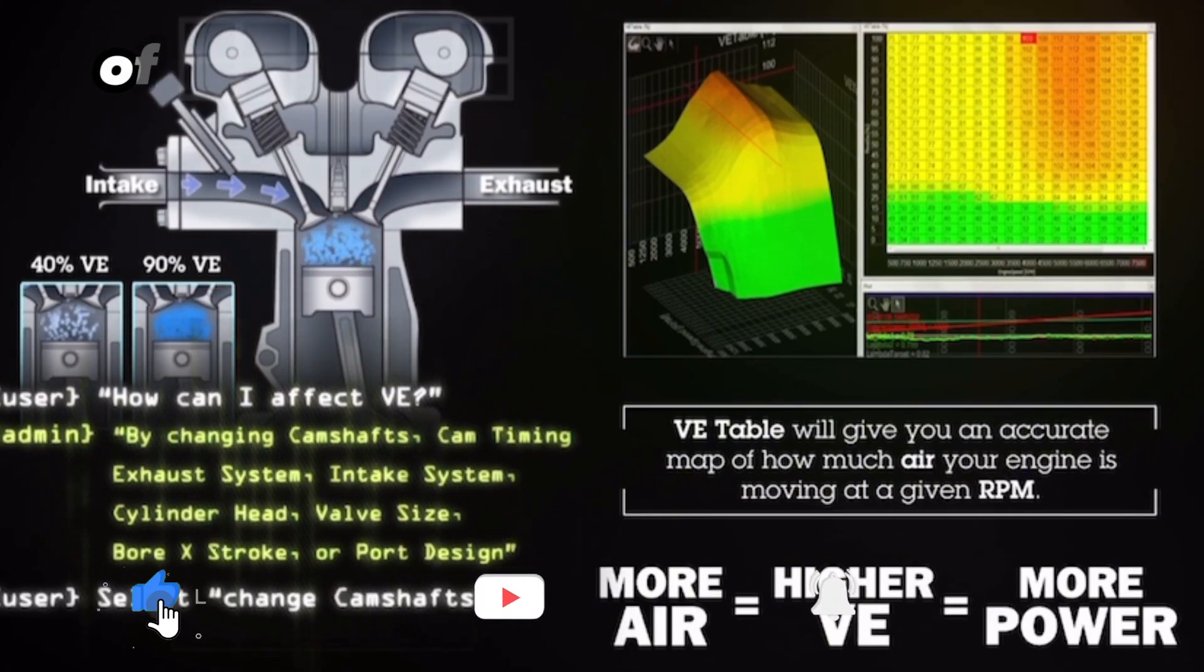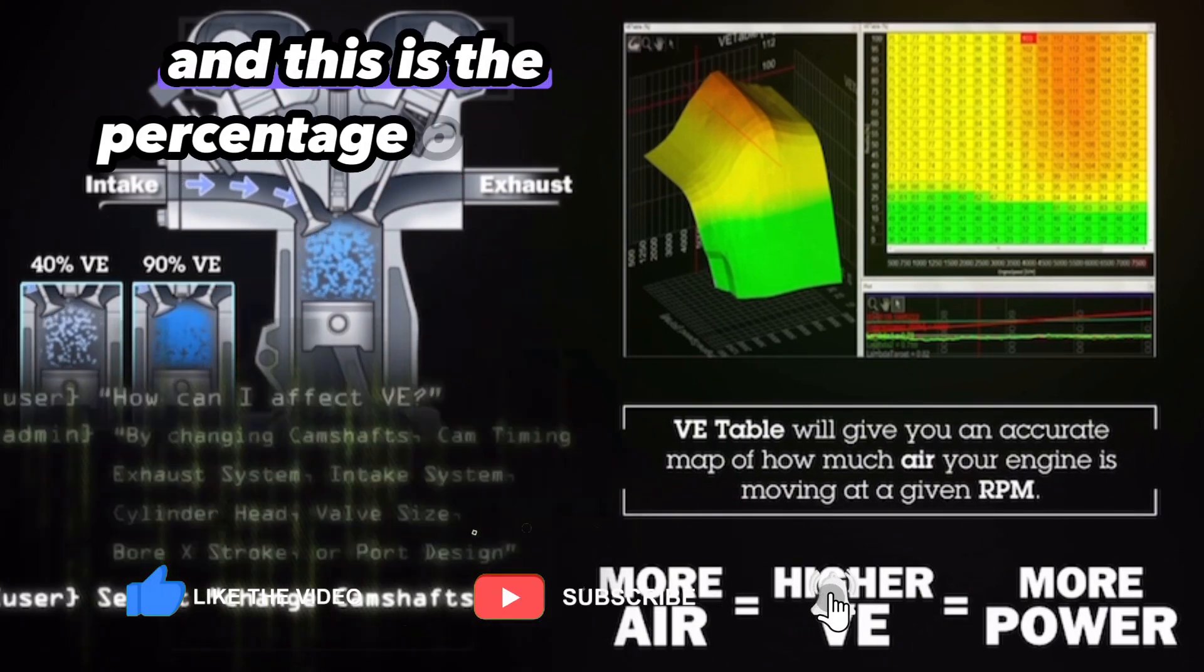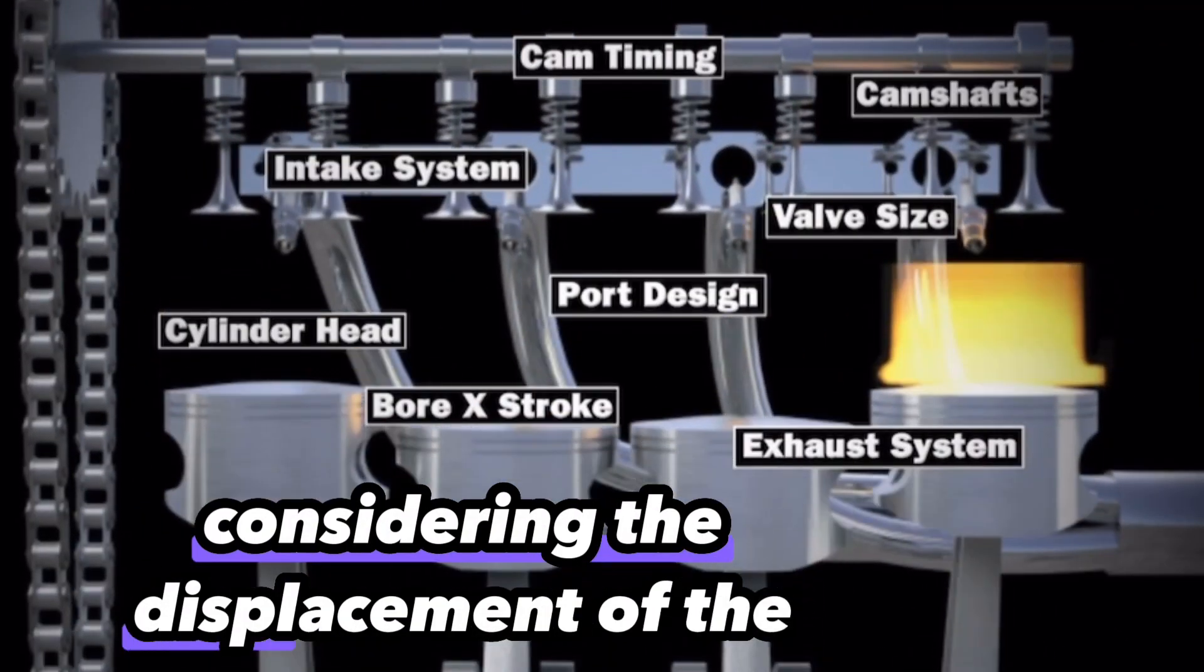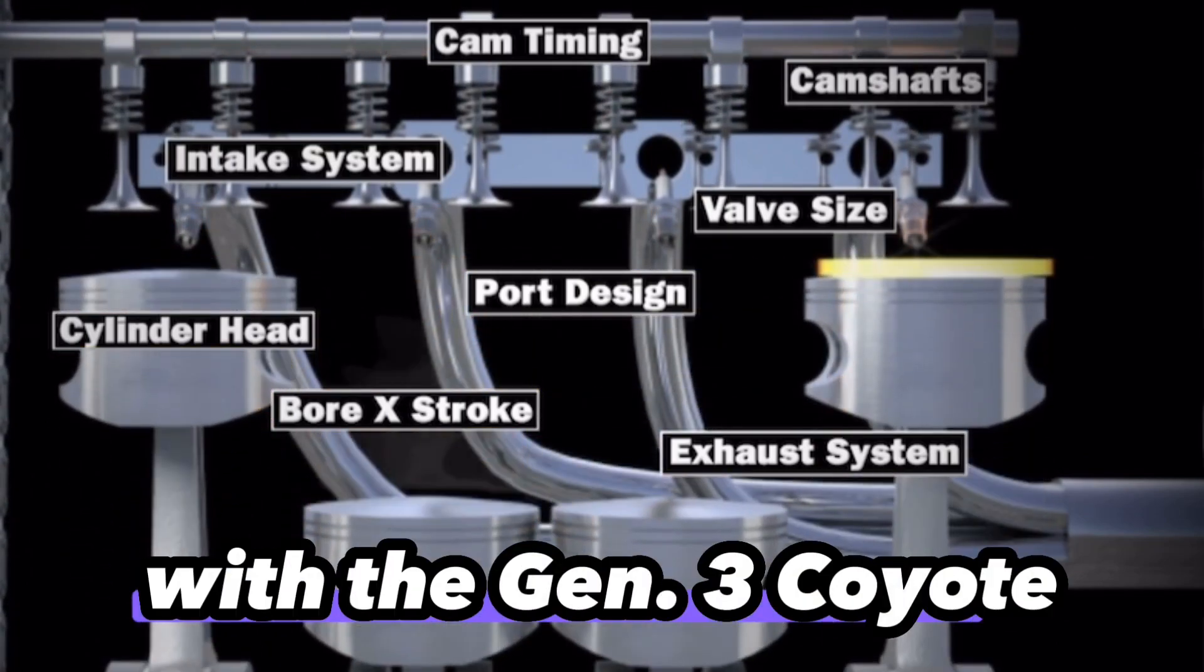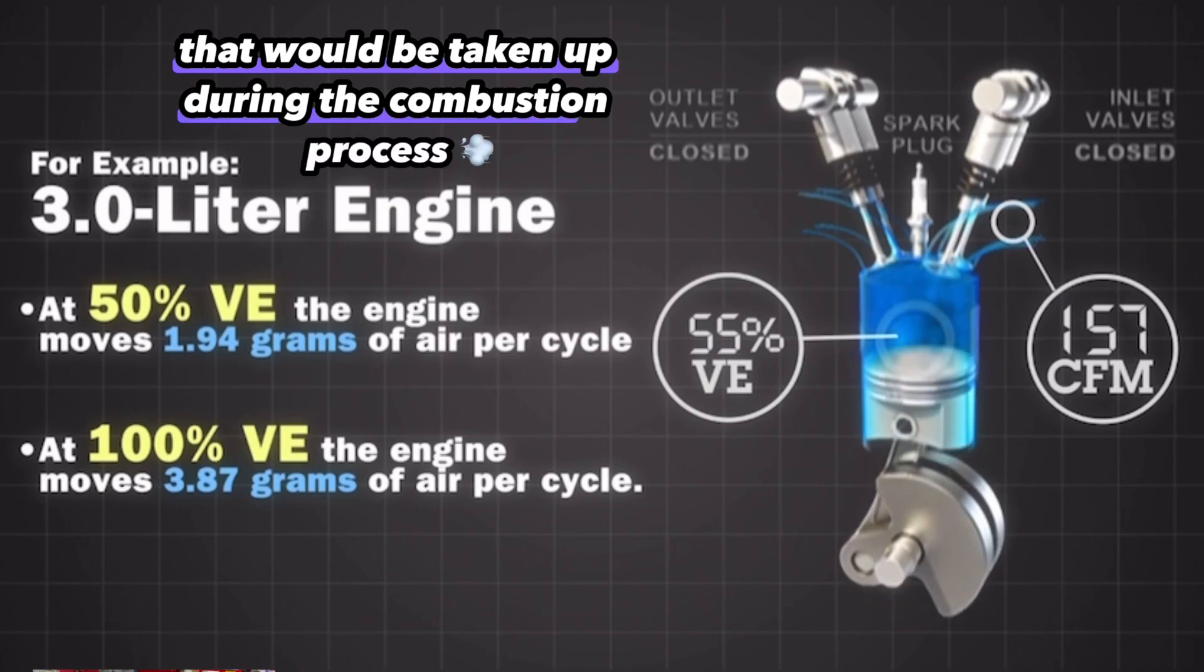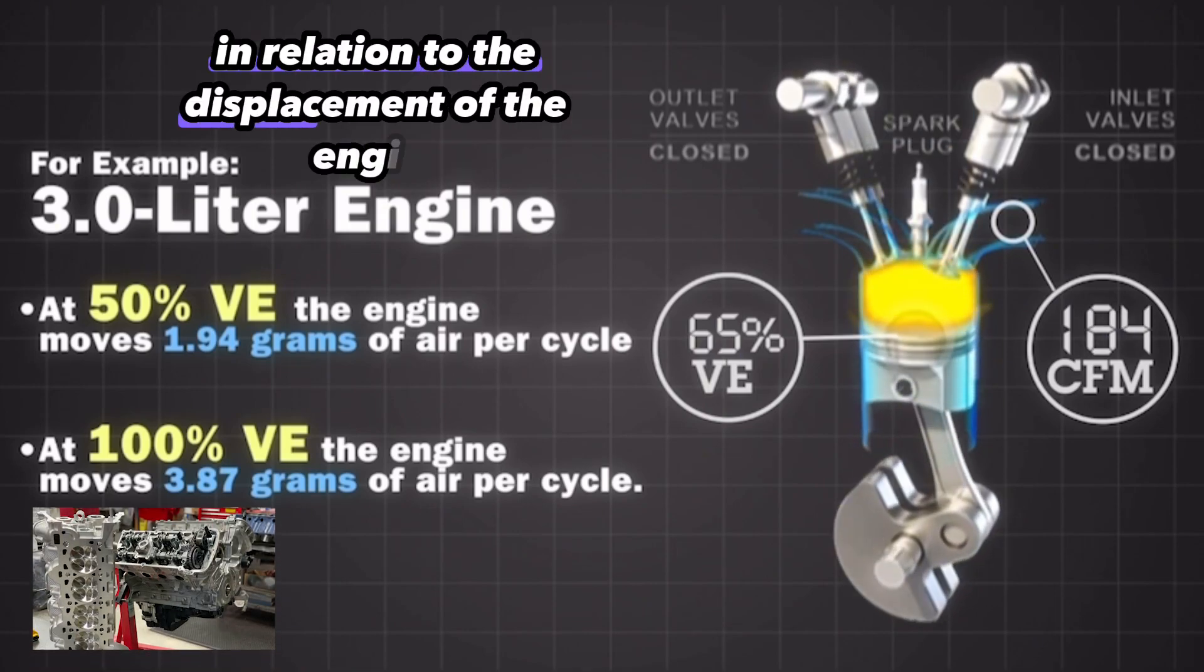So let's begin with the definition of volumetric efficiency and this is the percentage of air that is moved through a cylinder in one cycle considering the displacement of the engine. So for example, with the Gen 3 Coyote, it would be the hypothetical amount of air that would be taken up during the combustion process in relation to the displacement of the engine.